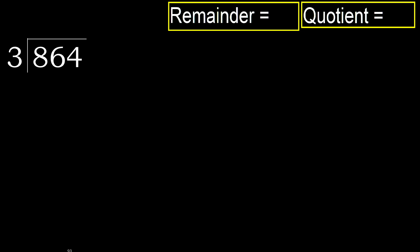864 divided by 3. 8 is not less, therefore start with 8. 3 multiplied by which number is nearest to 8 but not greater? 3 multiplied by 3 is 9 — 9 is greater. Multiplied by 2: 6 is not greater.